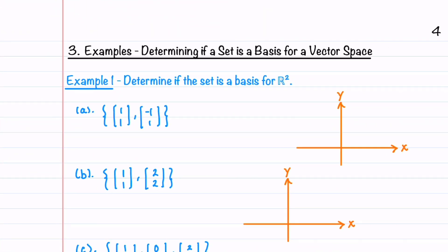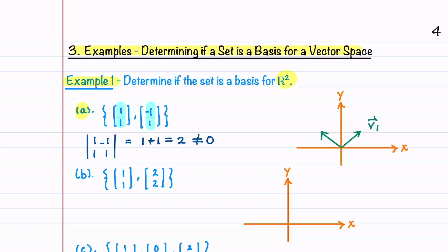Let's now walk through two examples where we'll determine if a given set is a basis for a vector space. In example 1, we'll determine if given sets are a basis for R2. Our first set contains two vectors. Since there are two vectors and two entries in each vector, we can use the determinant to determine if the set is linearly independent and spans R2. We take the determinant of these two vectors, which equals 1 + 1 = 2, and it's not equal to 0. That tells us these two vectors are linearly independent and they span R2. Graphing them, we can see that their span is a plane, meaning all vectors in R2 can be written in terms of these basis vectors.